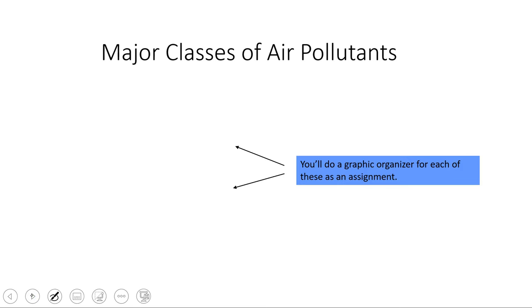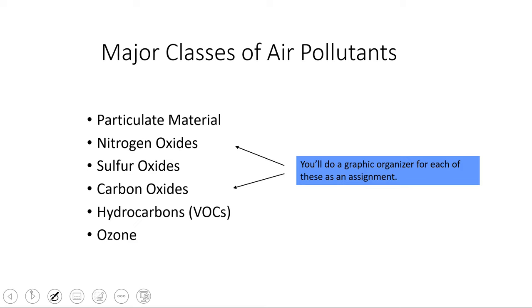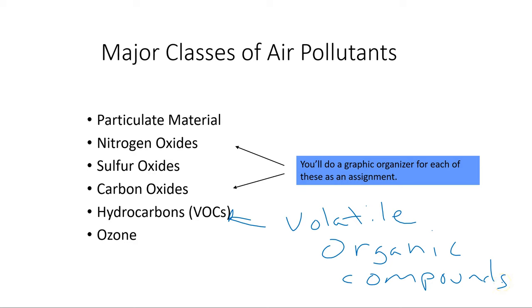What are our major classes of air pollutants? We've got particulate material, nitrogen oxides, sulfur oxides, carbon oxides, hydrocarbons often referred to as VOCs. That stands, by the way, for volatile organic compounds. It is important to remember that in the world of chemistry, the term 'organic' does not mean what they mean when they talk about organic agriculture. The term organic just means it's some sort of carbon-hydrogen compound, and volatile means it turns into a vapor relatively easily.